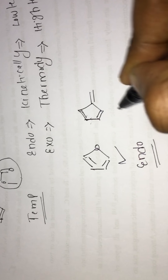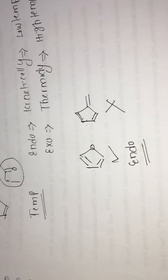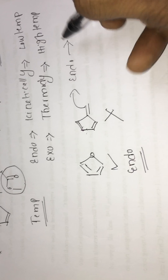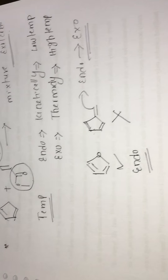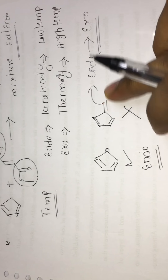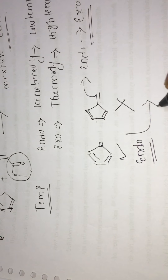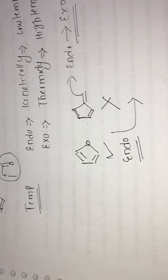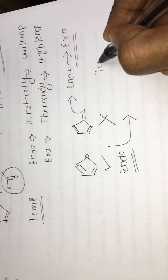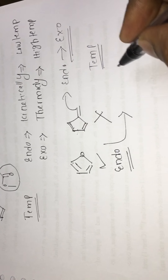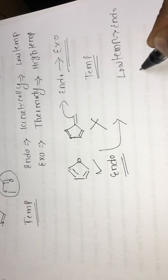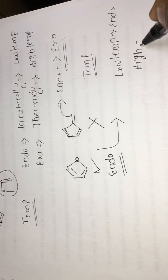Furan follows the endo addition rule, but fulvene does not follow this rule. The reason is that even though fulvene forms the endo product, it easily gets converted into the exo product at normal temperatures. For furan, high temperature is required to convert endo into exo. So generally: at low temperature the endo is the major product, and at high temperature the exo is the major product.